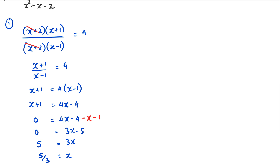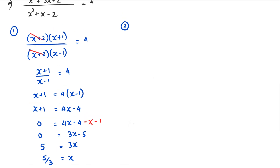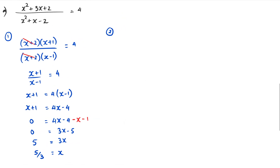You might be thinking that's great — one answer. But I want to show you the other method, because when you do it a second way you actually end up with two different answers. This is the second way of doing the same question, and instead of factorizing the numerator and denominator, we rearrange differently.